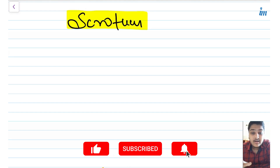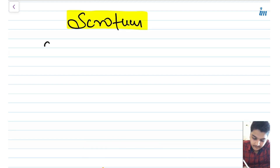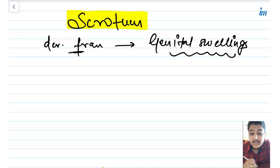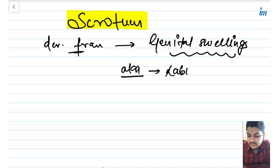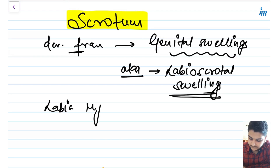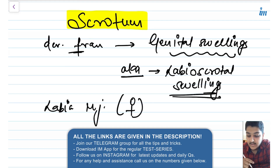The scrotum is derived from genital swellings, also known as labioscrotal swellings. They are called labioscrotal swellings because from the same genital swellings, in women, the labia majora develops. So scrotum in males and labia majora in women.